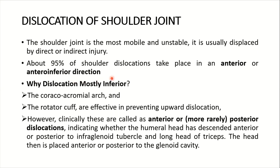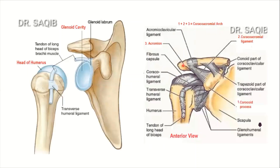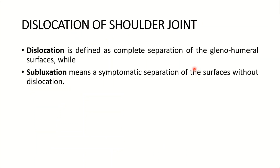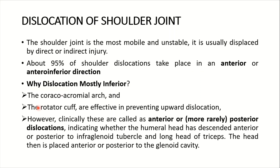Why does dislocation mostly occur inferiorly? The causative factors are: first, the coracoacromial arch and the rotator cuff are effective in preventing upward dislocation — they are present superiorly and thus prevent superior displacement, as you can see here. Third, and very importantly, the capsule of the shoulder joint is very weak in an inferior direction. Clinically, these dislocations are called anterior or, more rarely, posterior dislocations, indicating whether the humeral head has descended anterior or posterior to the infraglenoid tubercle and long head of triceps, with the head then placed anterior or posterior to the glenoid cavity.